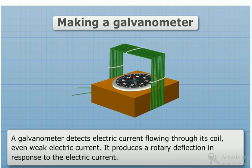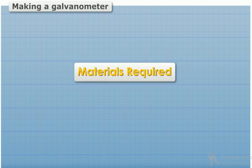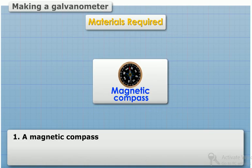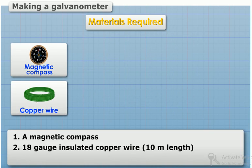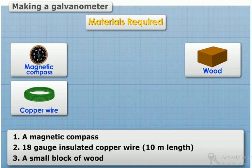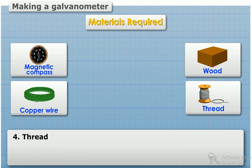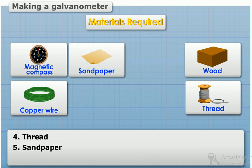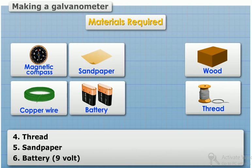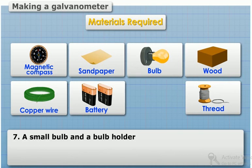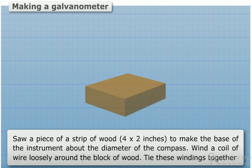Requirements: a magnetic compass, 18 gauge insulated copper wire (10 meters length), a small block of wood, thread, sandpaper, a 9-volt battery, a small bulb, and a bulb holder. Method: Saw a strip of wood, 4 by 2 inches, to make the base of the instrument.